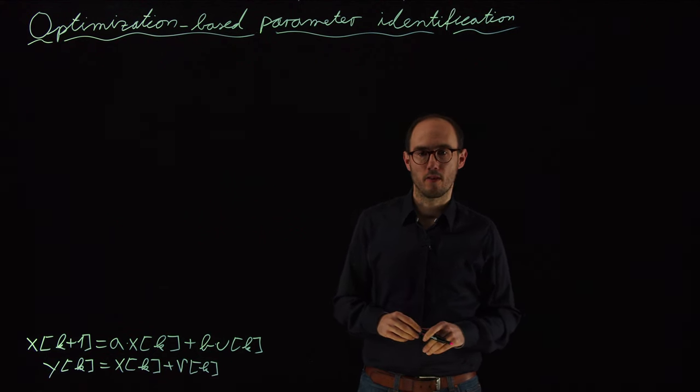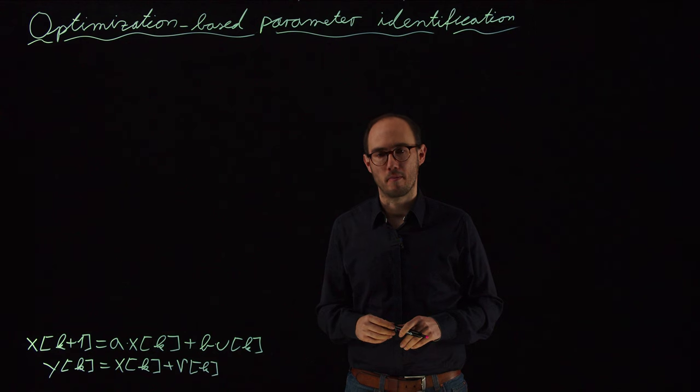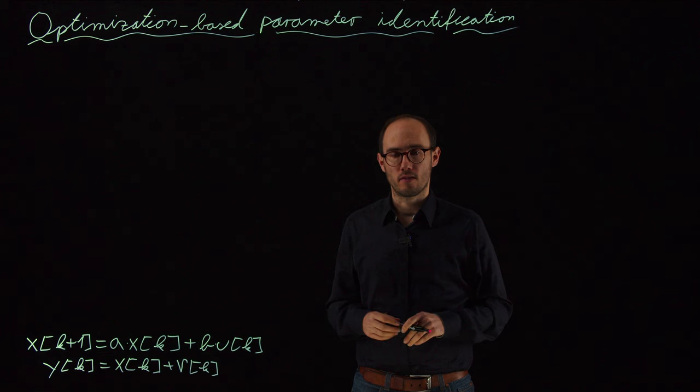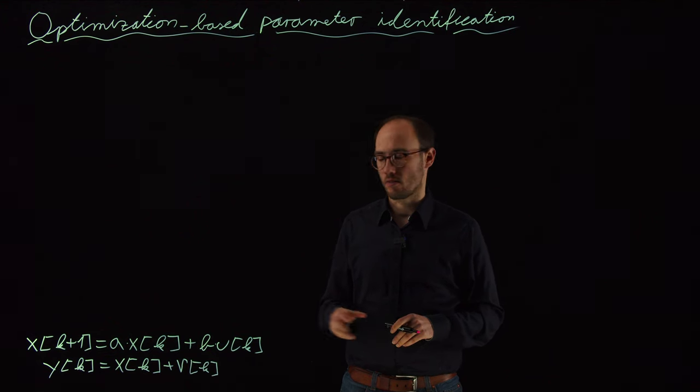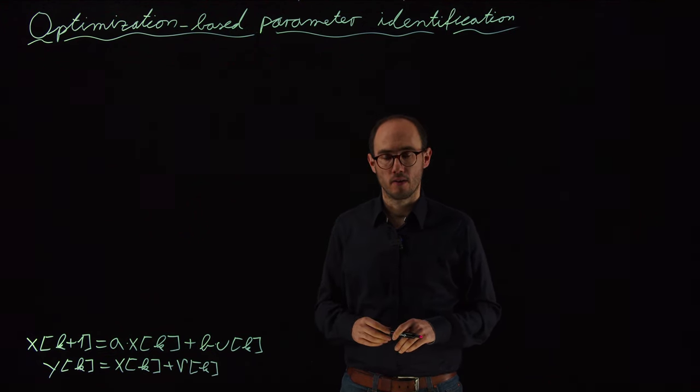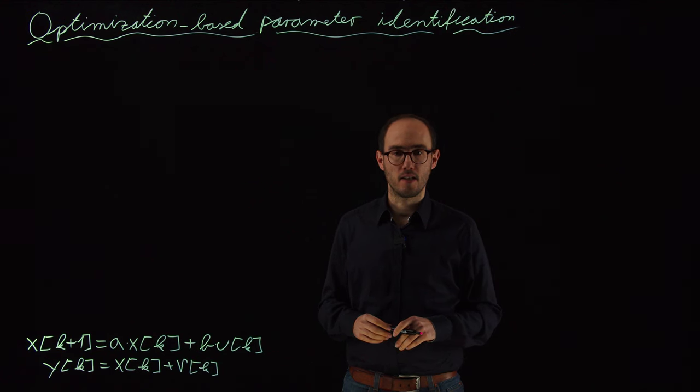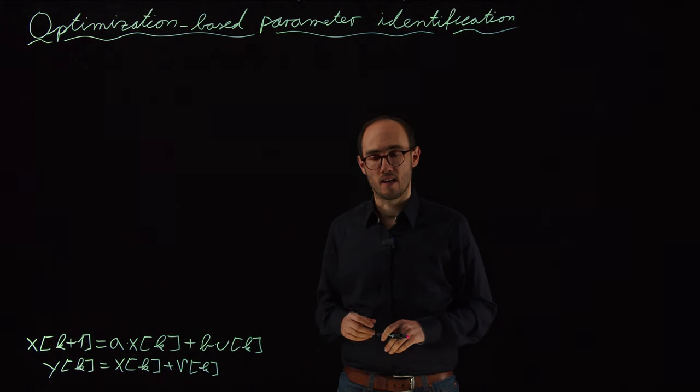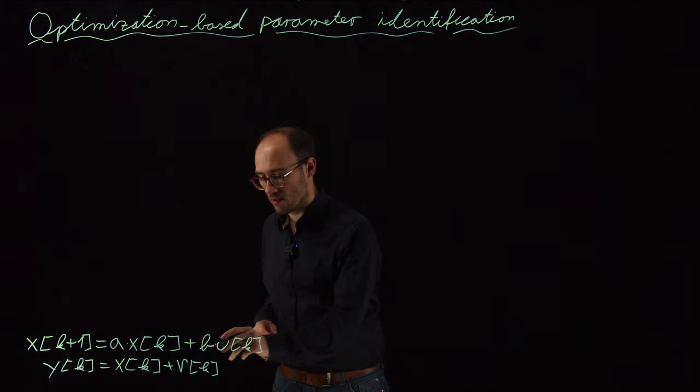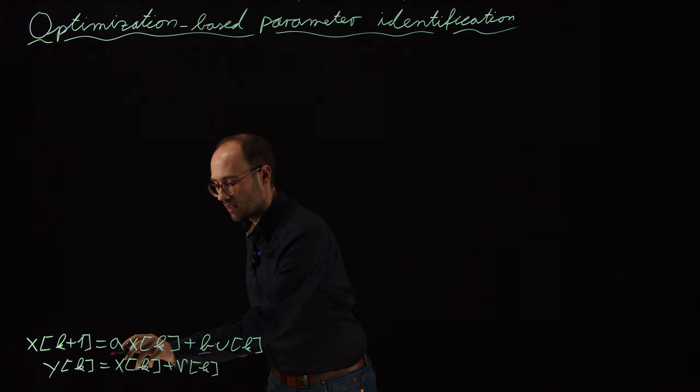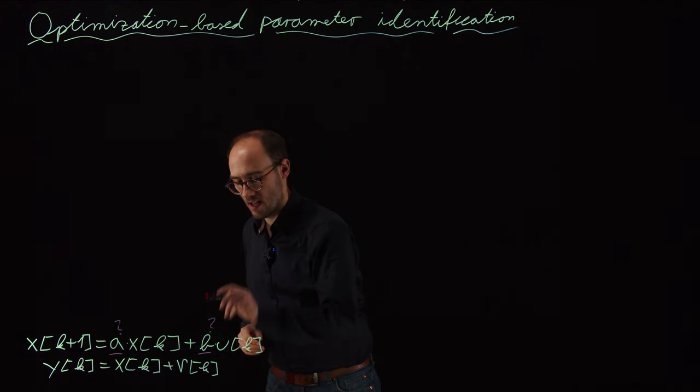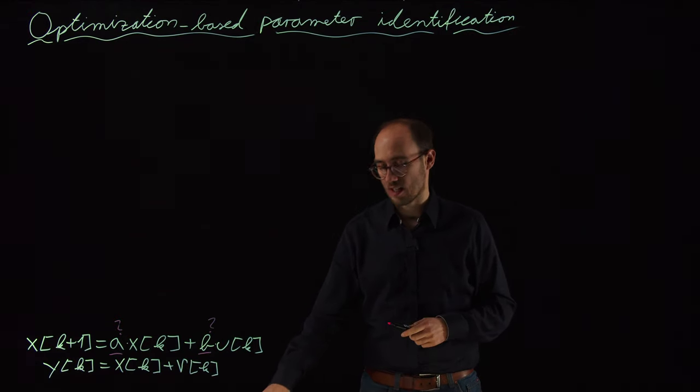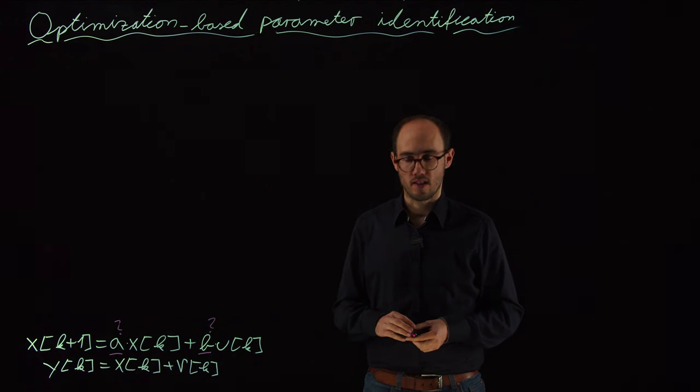Hello everyone and welcome to our next lecture series on optimization-based system and parameter identification. In order to start this lecture series, I would like to discuss a very simple identification problem which we already have seen in a couple of videos back—a linear system in discrete time where we wanted to identify the unknown parameters A and B, which we already did successfully, or let's say partially successfully, using ordinary least squares.